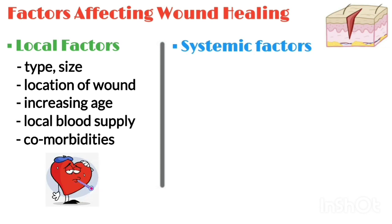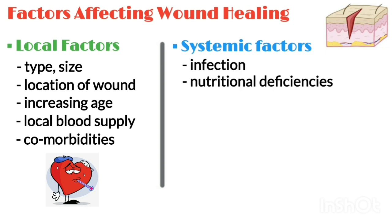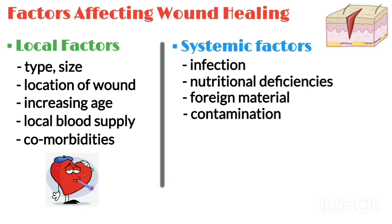Comorbidities especially include cardiovascular disease or diabetes mellitus. Systemic factors include infection, nutritional deficiencies especially vitamin C, foreign material or contamination, obesity, and radiation damage.